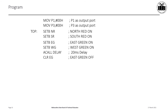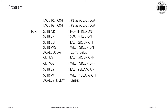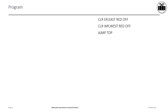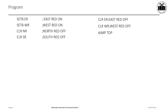After 20 milliseconds, the east and west green lights are turned off using CLR EG and CLR WG, and the yellow lights on east and west are turned on using SETB EY and SETB WY. This transition period lasts 5 milliseconds via ACALL Y_DELAY. When the 5 milliseconds are over, yellow lights EY and WY are cleared, and red lights on east and west are turned on using SETB ER and SETB WR.